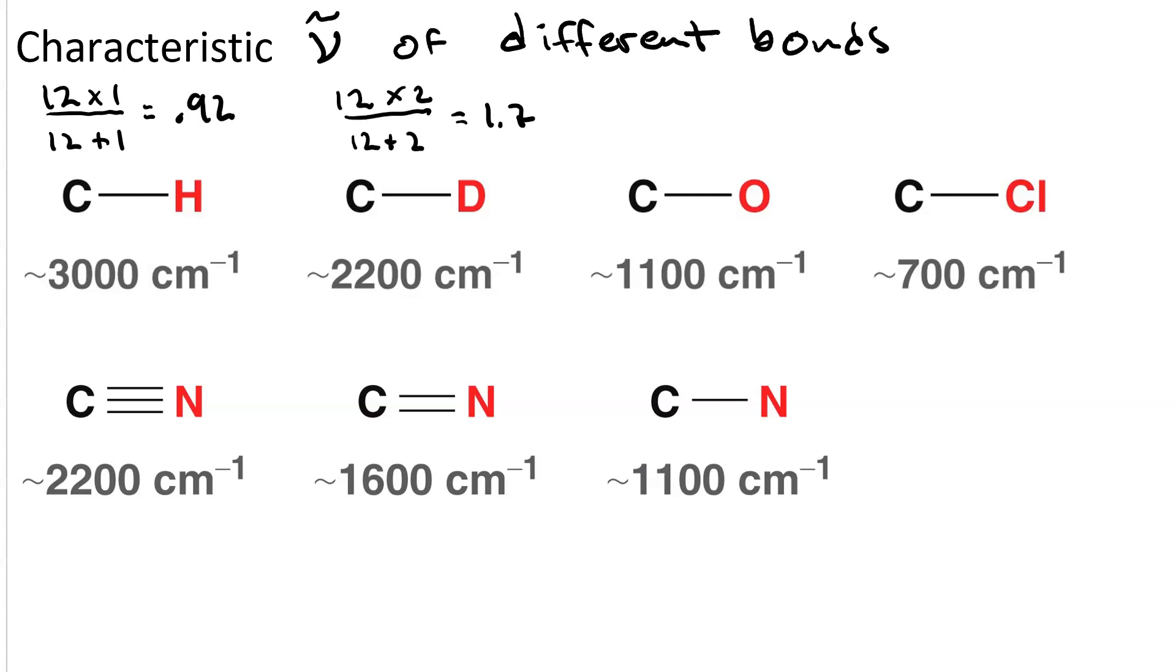So C-D has a greater reduced mass than C-H, and remember, wavenumber is inversely proportional to reduced mass. So it makes perfect sense that C-D is at 2200 and C-H is at 3000.